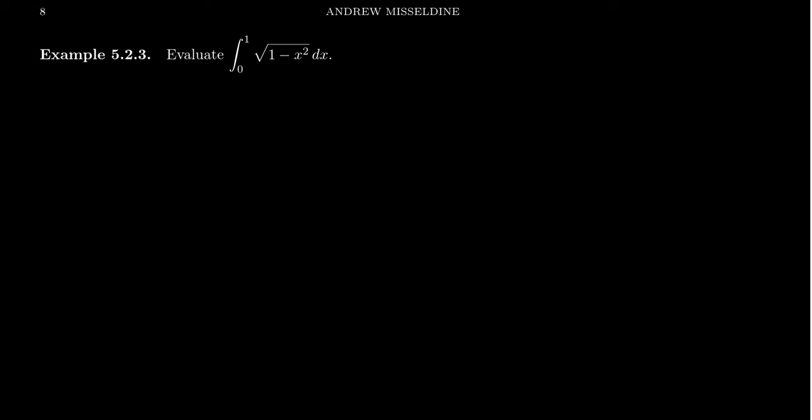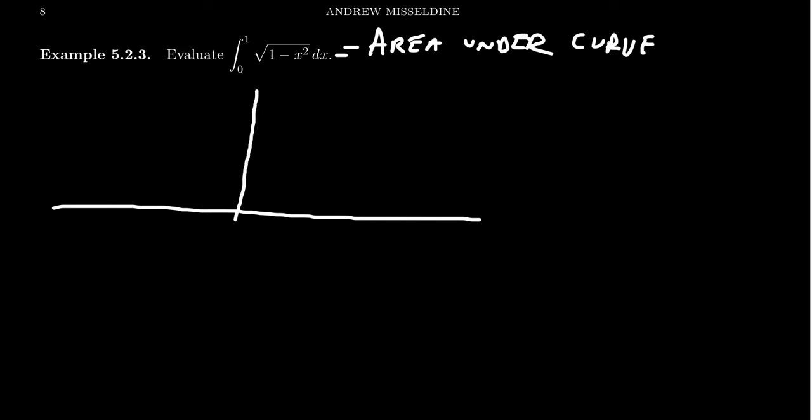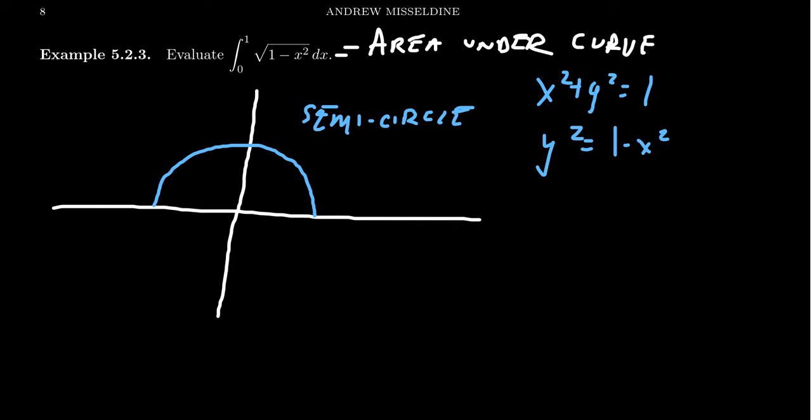Here's another example. Let's evaluate the integral from 0 to 1 of the function square root of 1 minus x squared dx. This is trying to calculate the area under the curve. It can be helpful to understand what does this curve look like. This is a function which is a semicircle. To see this, if you take the unit circle, x squared plus y squared equals 1, if you solve for y squared, you get y squared equals 1 minus x squared. If you then solve for y, you'll get plus or minus the square root of 1 minus x squared. Choosing the plus gives you the upper semicircle, and choosing the minus gives you the lower semicircle.